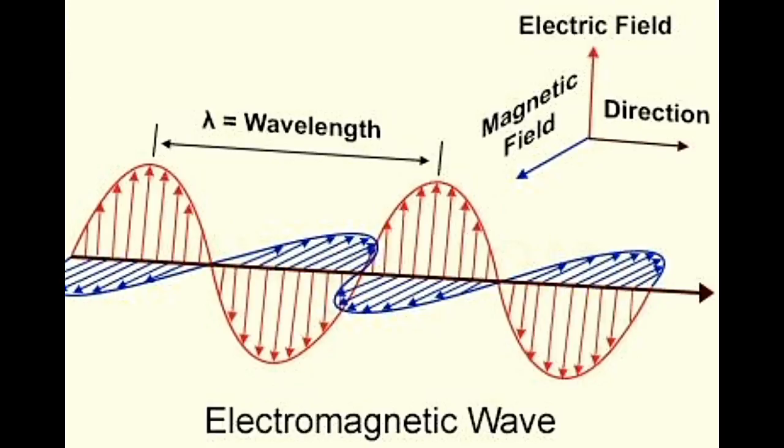Consequently, the changing magnetic field again creates an electric field. This continues ad infinitum, creating an electromagnetic wave traveling in space. This is how light travels, as a disturbance or ripple in the electromagnetic field.